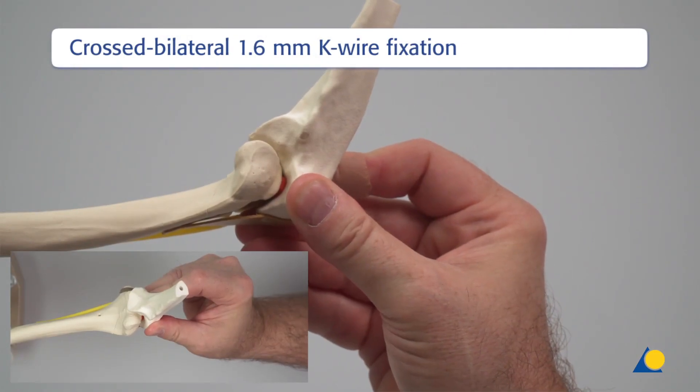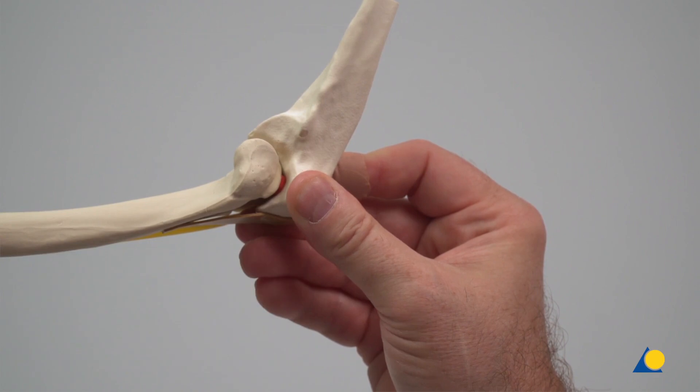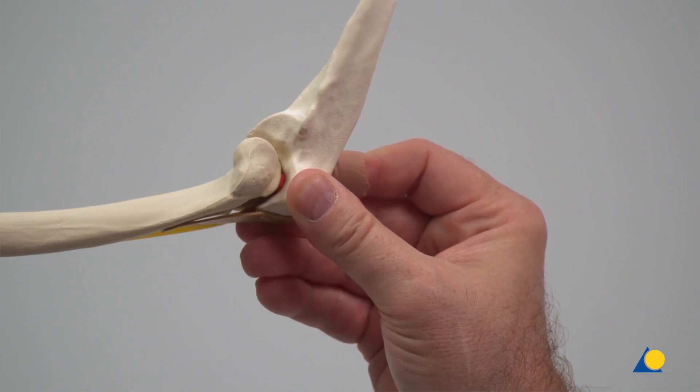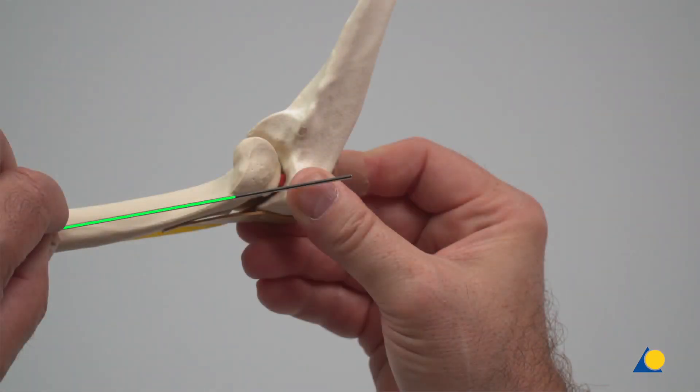The crossed bilateral technique using 1.6 mm K-Wires bilaterally from the radial and ulnar direction will now be demonstrated. In the clinical situation, a small incision or a direct puncture with the K-wire is made over the planned entry points. The first K-wire insertion is planned with a centered alignment to the axis of the humerus shaft in the lateral view. This alignment will result in the K-wire entering the posterior third of the olecranon fossa.